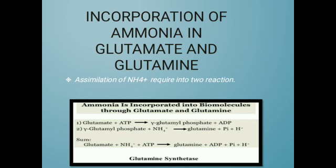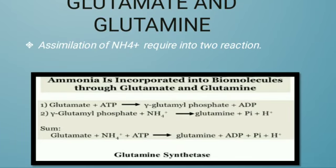The last subtopic is the incorporation of ammonia in glutamate and glutamine. Assimilation of ammonia requires two chemical reactions. Ammonia is incorporated into biomolecules through glutamate and glutamine. In the cycle reaction: glutamate plus ATP forms glutamyl phosphate plus ADP; glutamyl phosphate with ammonia forms glutamine. The overall reaction is: glutamate plus ammonia plus ATP forms glutamine and ADP, in the presence of enzyme glutamine synthetase.